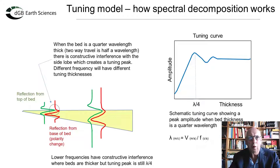So how does it work? We should all be familiar with thin bed tuning, which occurs when the side lobe from a reflection from the bottom of a bed aligns with the peak of the reflection from the top of the bed. Note that the polarity flips when the acoustic impedance below the reflector is less than the acoustic impedance above. The two reflections constructively interfere when the bed is a quarter of a wavelength thick, or half a wavelength two-way time. This tuning results in the highest amplitude reflection when bed thickness is a quarter wavelength. For different frequencies, the wavelength varies and information about different thicknesses can be obtained.